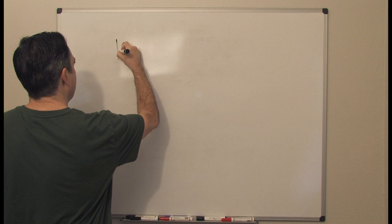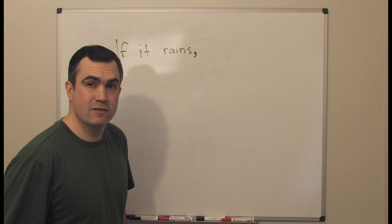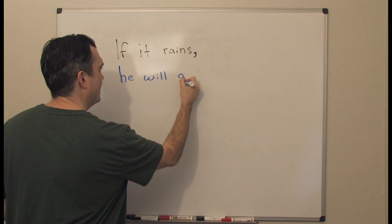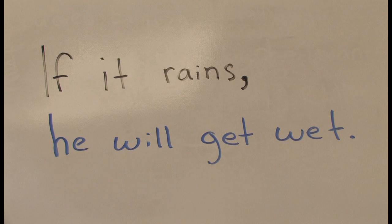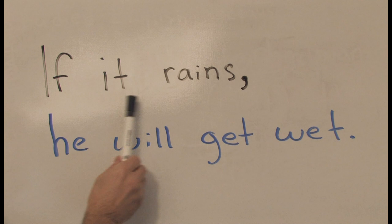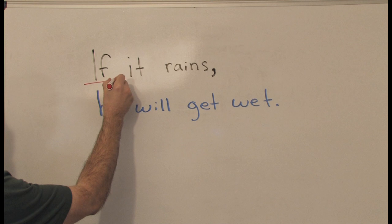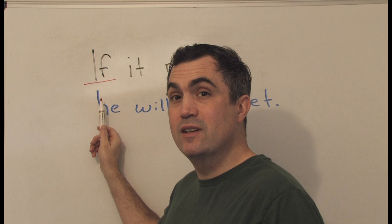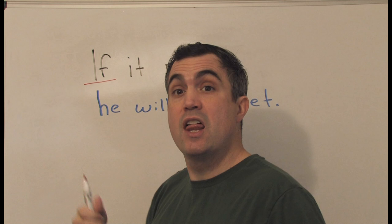Let's look at that example on the board: If it rains, he will get wet. 'If' is like the magic word. We use this word for the conditional. Maybe yes, maybe no, but if this happens, this will happen. That's the first conditional — 'if' and 'will'.